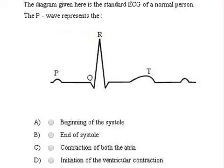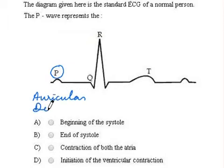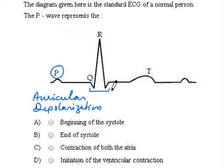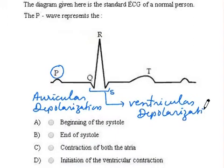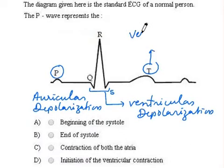This is a standard ECG of a normal person. Let us see what these waves represent. P wave represents auricular depolarization. The wave QRS represents ventricular depolarization, and wave T represents ventricular repolarization.